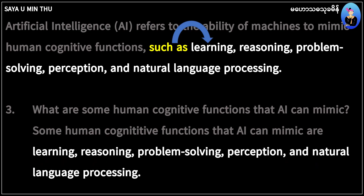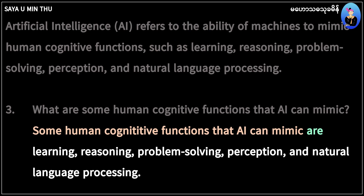Learning, Reasoning, Problem Solving, Perception, and Natural Language Processing. Some human connected functions that AI can mimic are learning, reasoning, problem solving, perception, and natural language processing.